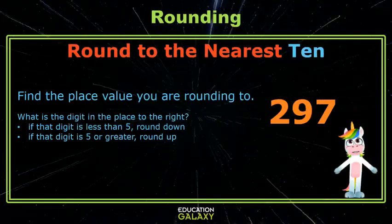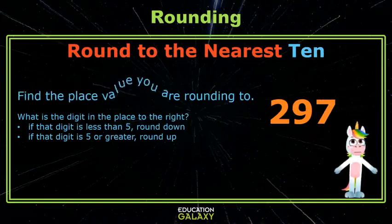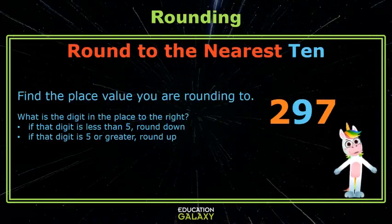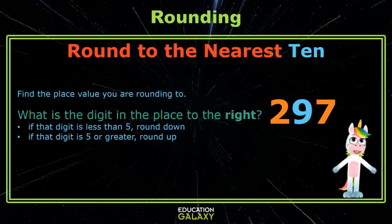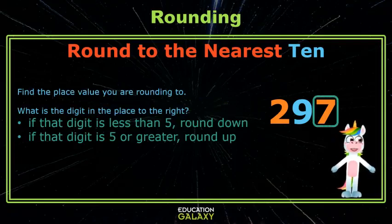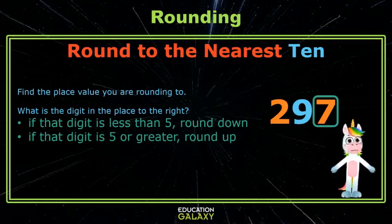Here we're rounding 297 to the nearest 10. First, we'll find the place value we're rounding to — that's where the 9 is. Now we ask ourselves, what digit is in the place to the right? That's the 7. Is that digit less than 5, or is that digit 5 or greater? It's greater than 5, so we'll round up.